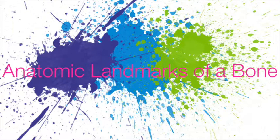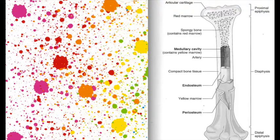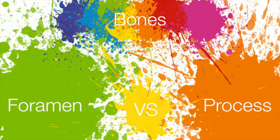Anatomic landmarks of a bone exist so you can discuss them through writing or reading a textbook. The diaphysis is the shaft of a long bone. The epiphysis, which is covered with articular cartilage, is the wide end of a long bone. The proximal epiphysis is nearest to the midline of the body; the distal epiphysis is farthest away. A foramen is an opening in a bone through which blood vessels, nerves, and ligaments pass — for example, the spinal cord runs through the vertebral foramen. A process is a normal projection of the bone surface that serves as attachment for muscles and tendons.